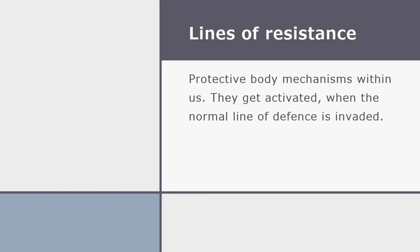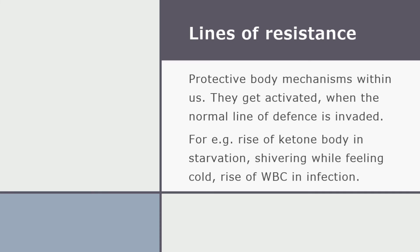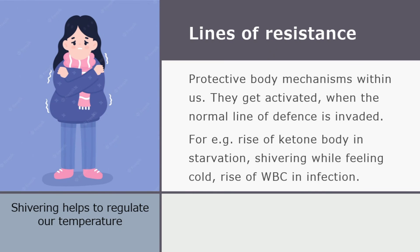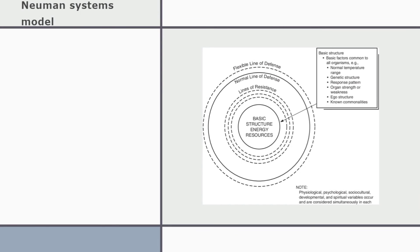Lines of resistance are protective body mechanisms we already have within us. They are automatically activated when the normal line of defense is invaded. For example, during starvation, ketone bodies increase to compensate for carbohydrate scarcity. When we feel cold, we shiver — a body mechanism to regulate temperature. When we get an infection, our WBC count increases. These are our lines of resistance. In summary, the basic structure is protected by lines of resistance.